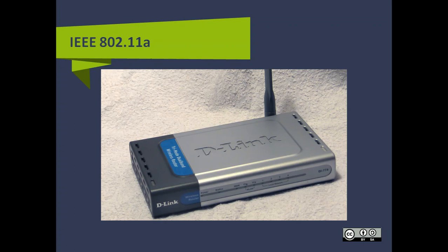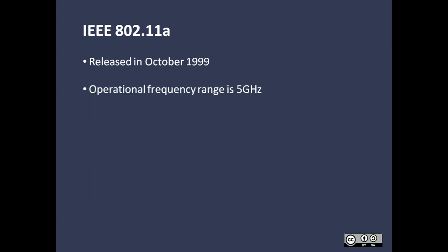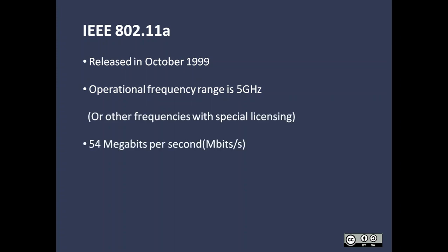Let's move to 802.11 A. One of the very first wireless standards was 802.11 A. It was developed in October of 1999. It operates in the 5 GHz range. Some other frequencies can be used with special licensing.